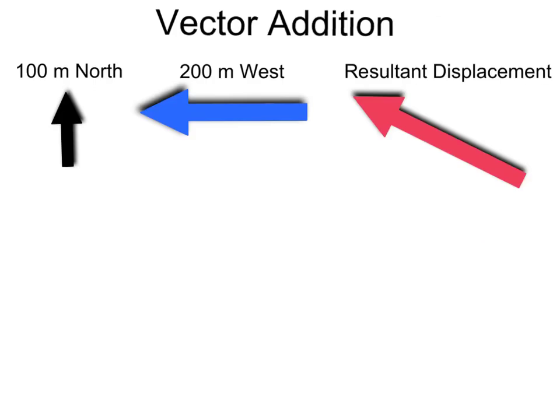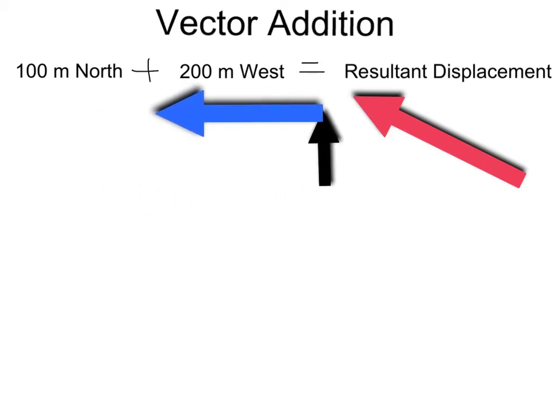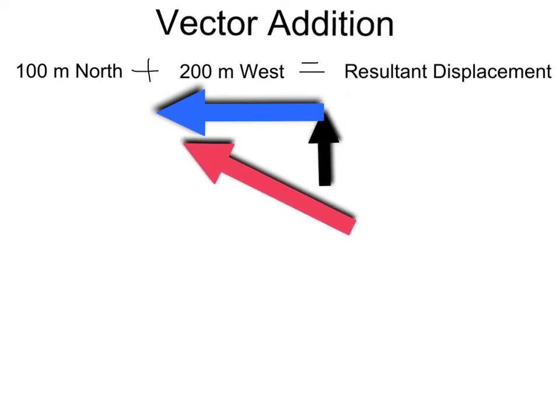Okay, we're back to our problem here. We want to take 100 meters north and add it to 200 meters west and see what our resultant displacement is. If we move our vectors here, here's 100 meters north. We want to add it to 200 meters west, and our resultant displacement will be right here. So we're looking to find out what this side is, what the magnitude is, the distance, and then also the direction we want to know what this angle is.